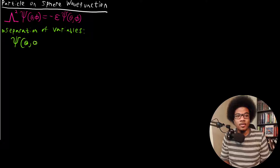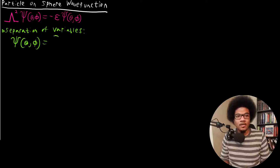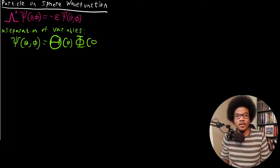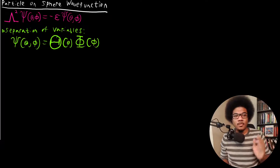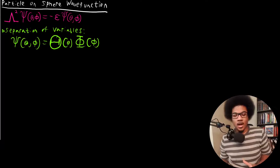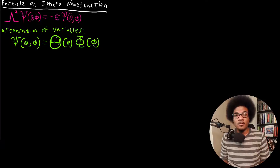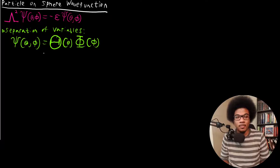So we have this wave function that we're going to build from two functions. We're going to have capital Theta, which will be a function of theta, and capital Phi, which will be a function of phi. So we have two functions — one that depends on theta and one that depends on phi.